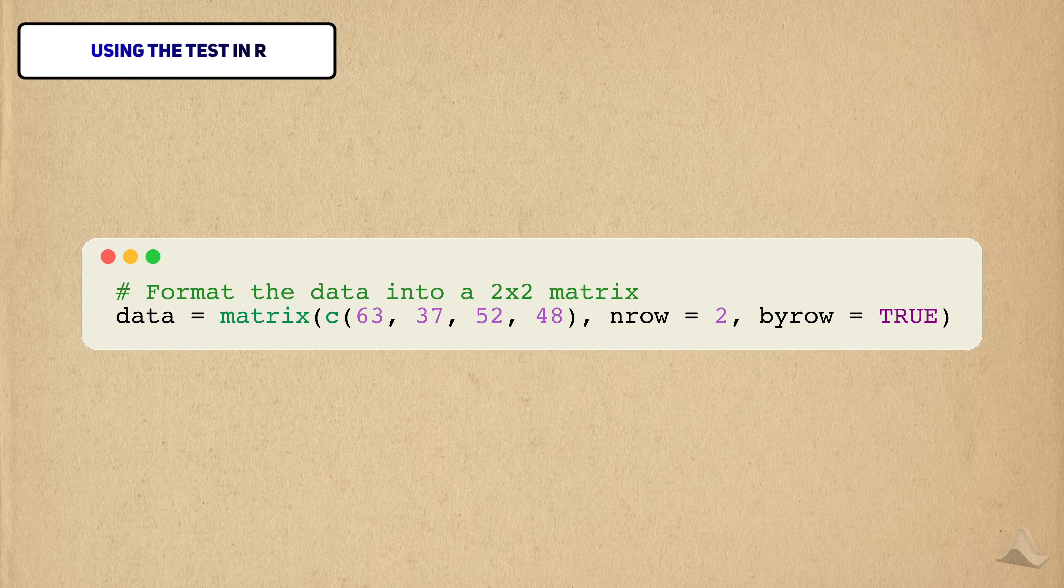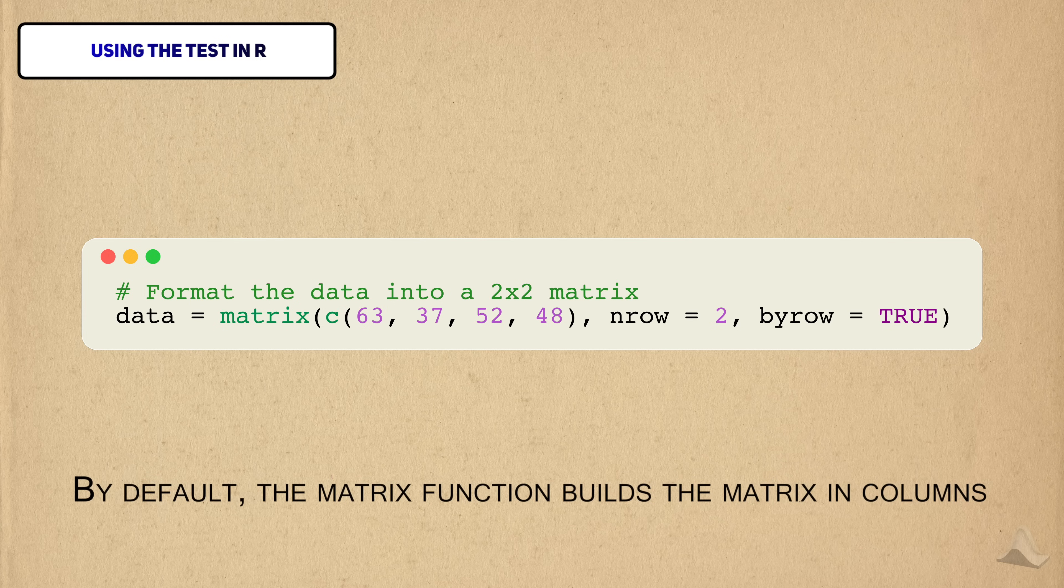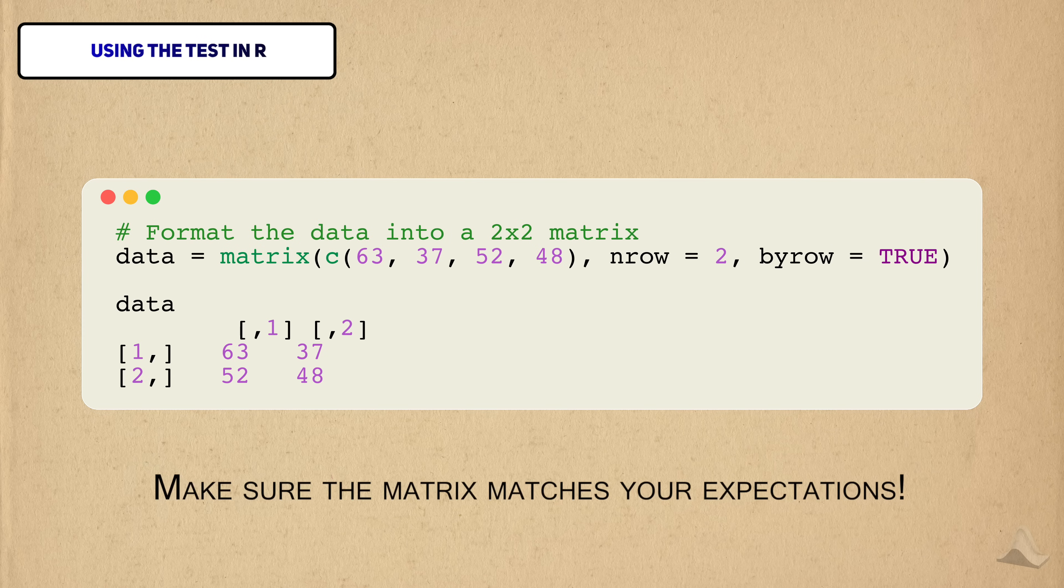It's easiest to supply the data in the form of a matrix, which better fits the form of a contingency table. To create the matrix, you use the matrix function. By default, the matrix function takes in a vector and builds the matrix by column. I like to build a matrix by rows, so I set the byrow argument to true. Make sure you double-check your matrix to make sure the data is organized in the way you want.